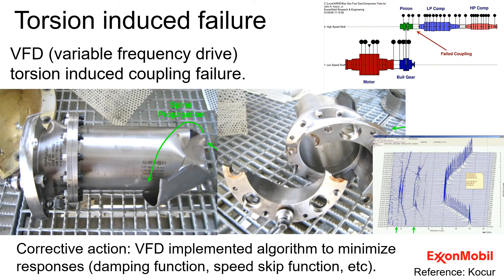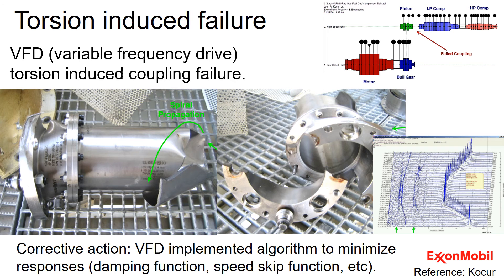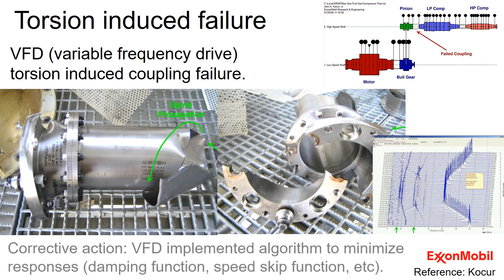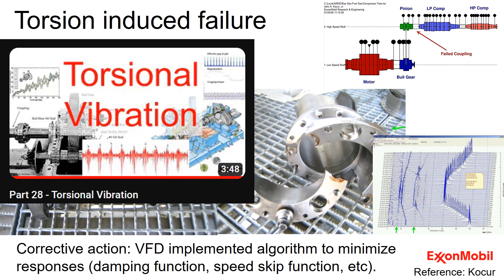There are many examples of torsional vibration-induced machine failure. Here is an example of a coupling failure due to VFD, variable frequency drive. There are smart ways to implement algorithm in the drive to minimize responses. Part 28 video offers an introduction to torsional vibration.